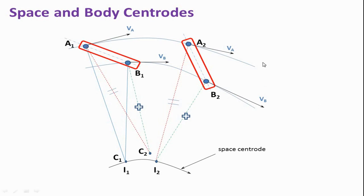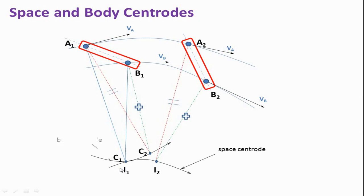Similarly, for position A3 B3, we can locate C3. Drawing a curve through C1, C2, C3 gives the body centrode. We observe that C1 coincides with I1 for the first position, and when the link moves to A2 B2, C2 coincides with I2. This means the body centroid circle rolls over the space centroid circle. This is the body centrode.